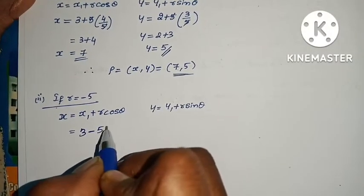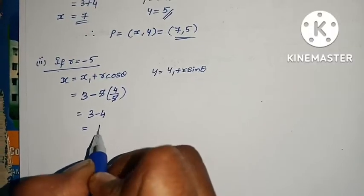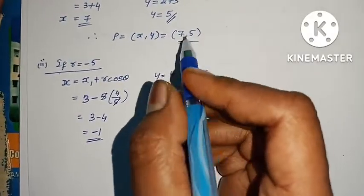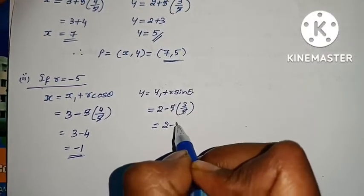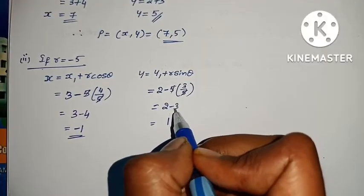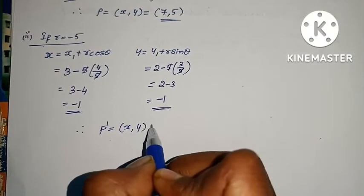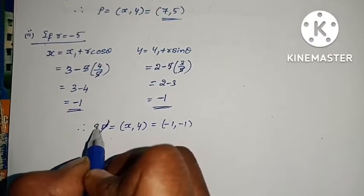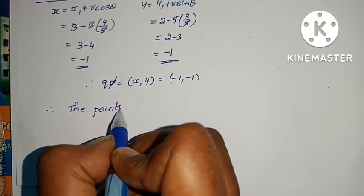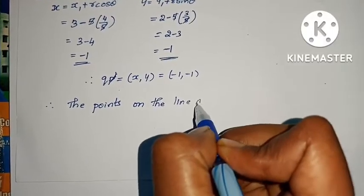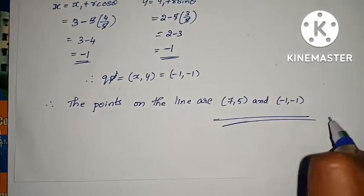Second case, r = -5: x = x1 + r·cos θ = 3 + (-5)·(4/5) = 3 - 4 = -1. y = y1 + r·sin θ = 2 + (-5)·(3/5) = 2 - 3 = -1. Therefore P' = (x, y) = (-1, -1). Therefore the points on the line are (7, 5) and (-1, -1). Problem complete.